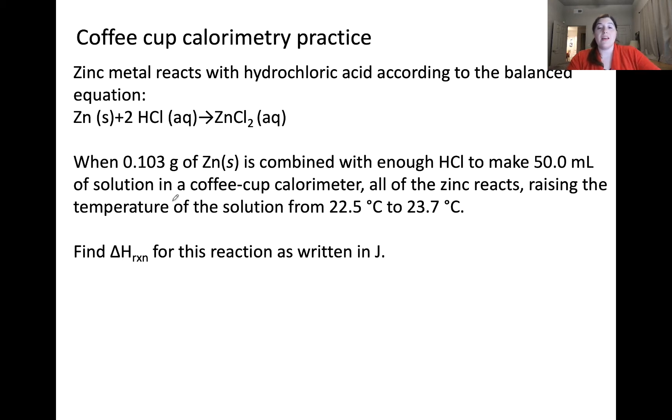Importantly, the information given here is all regarding 0.103 grams of zinc combined with enough HCl to make a 50 milliliter solution. As written, this reaction shows one mole of zinc reacting with two moles of hydrochloric acid to form one mole of zinc chloride. This is what we're actually trying to find delta H of, of the reaction as written.